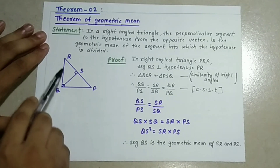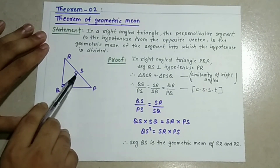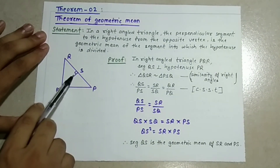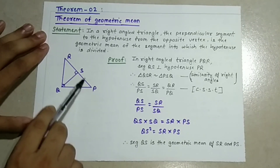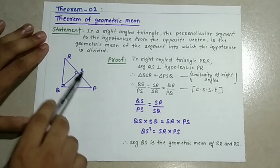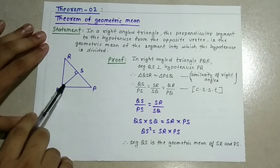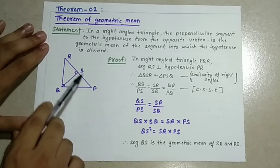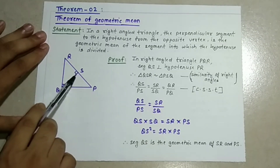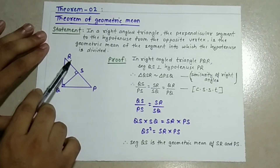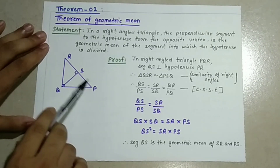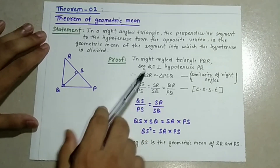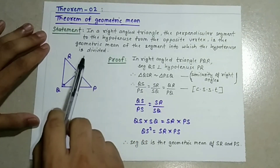It is the geometric mean of the segments into which the hypotenuse is divided. QS has divided RP into two parts: RS and SP. So QS is the geometric mean of RS and SP. This is the statement of the theorem.